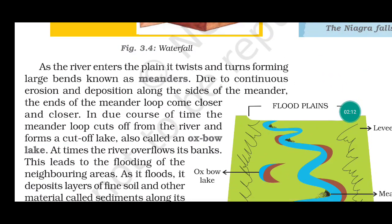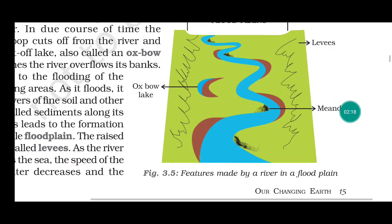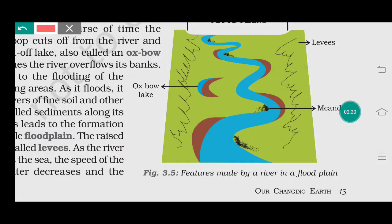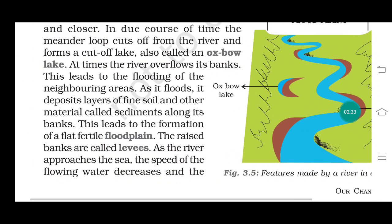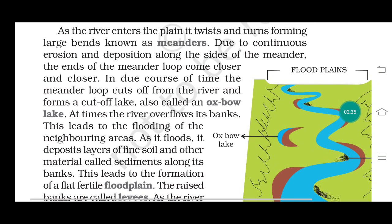As the river enters the plain, it twists and turns forming large bends known as meanders. We can see in the picture here there are bends, and these bends are known as meanders. Due to continuous erosion and deposition along the sides of the meanders, the ends of the meander loops come closer and closer.